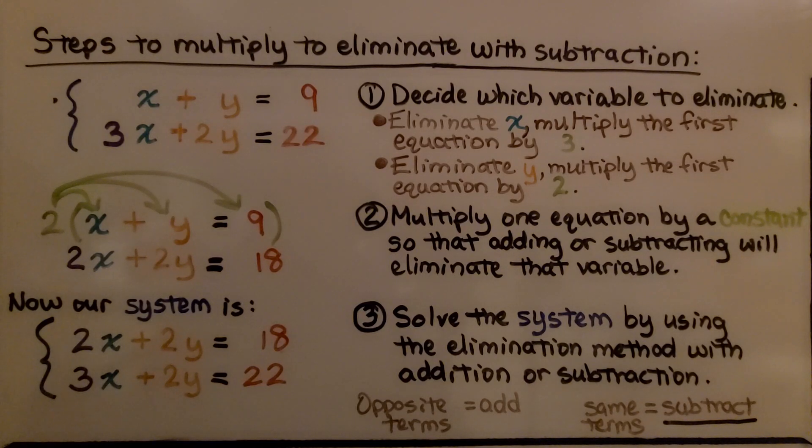Then we multiply one equation by a constant so that adding or subtracting will eliminate that variable. We'll get 2x plus 2y equals 18. Now this is our system of equations. We can see we've got a plus 2y plus 2y. We solve the system by using the elimination method with addition or subtraction, whichever one fits.